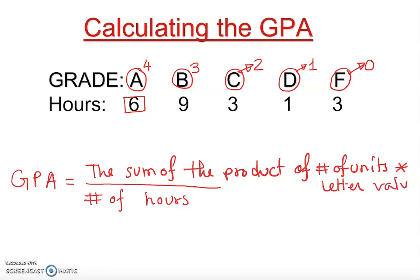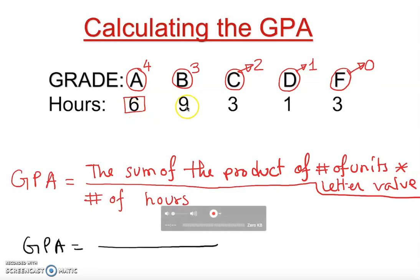Like a formula, okay? So this is basically we can think of the rule of the formula. So GPA, GPA is equal to total number of hours. So I'm going to add all this: 6, 9, 3, 1, 3. I'm going to find the sum. Okay, so 6 plus 9 plus 3 plus 1 plus 3.